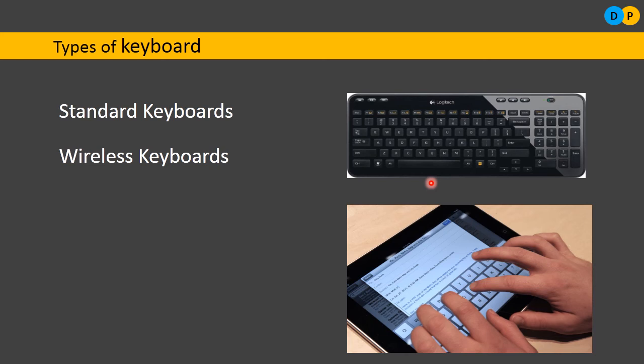Another type is the wireless keyboard. Standard keyboards connect to the computer via wires and cables, which are messy, tend to tangle, and limit movement to about one meter. With wireless keyboards, they work the same as standard keyboards but the connection is via Bluetooth, infrared, or radio waves — there are no wires, so you can carry them more freely.